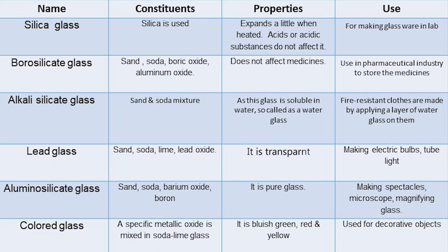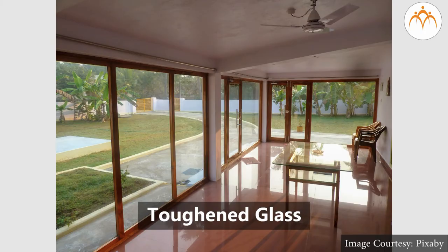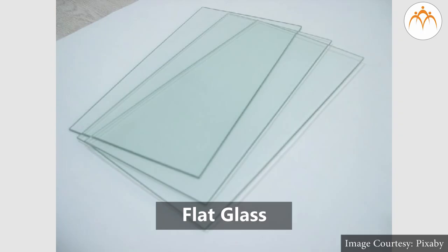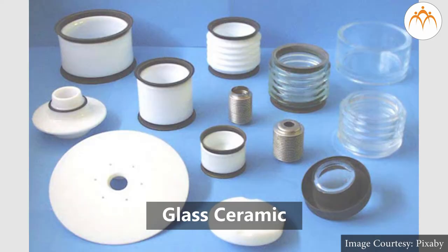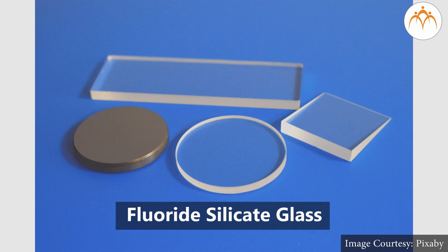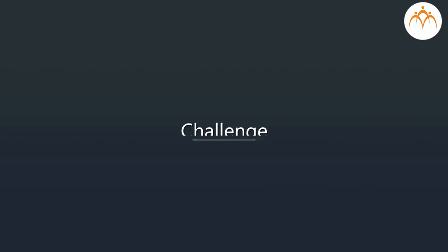Optical glass: constituents are sand, soda, barium oxide and boron; it is pure glass; it is used in making spectacles, microscopes and magnifying glasses. Colored glass: a specific metallic oxide is mixed in soda lime glass; it is bluish-green, red and yellow; it is used for decorative objects. Other types include fiber glass, toughened glass, flat glass, silica-free glass, glass ceramics, and pluroid silicate glass.